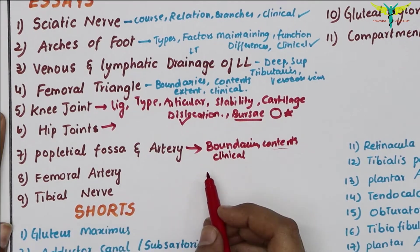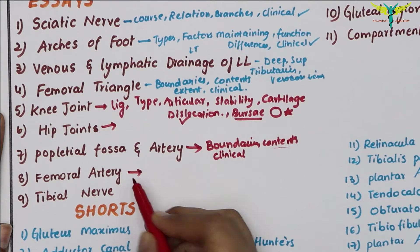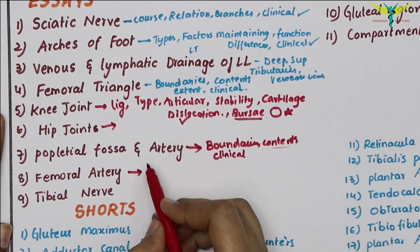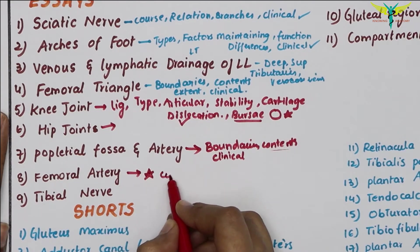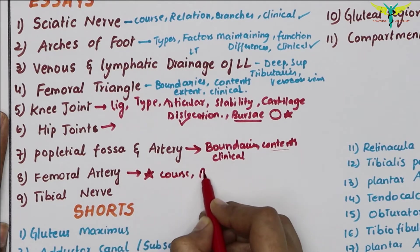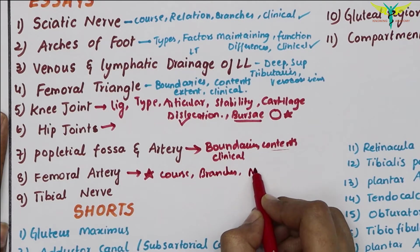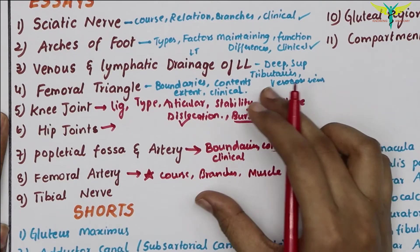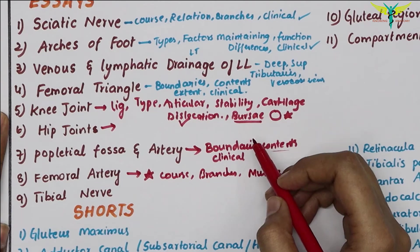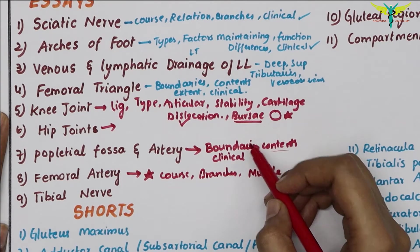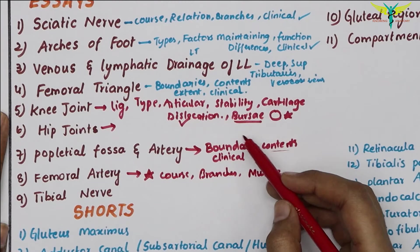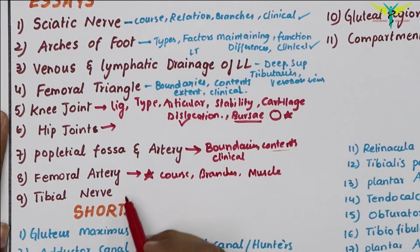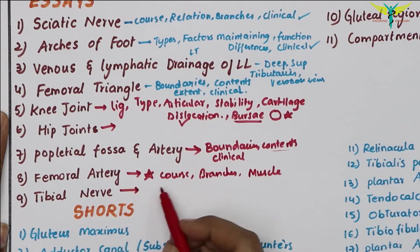The next essay question is the femoral artery, which is a very important question these days. You should write about its course, branches, the muscles it is applied to, and include three to four diagrams with nice coloring and labeling. The tibial nerve is also important, particularly its division.